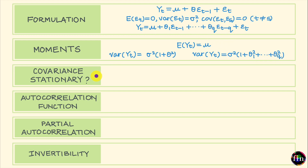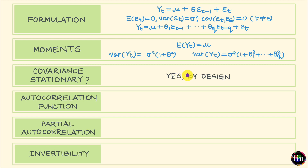Now let's move on to covariance stationarity. When it comes to moving average models, these models are covariance stationary by design, which means you don't have to check for covariance stationarity based on your choice of model parameters. Irrespective of the model parameters you choose, moving average processes are covariance stationary by design.